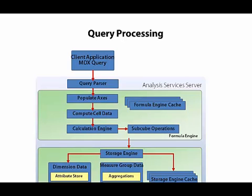The storage engine relies on the structure of dimension data, especially hierarchies and attribute relationships, to determine how to roll up fact-level data into the attributes requested in the query, but then it needs to decide where to get the data from.